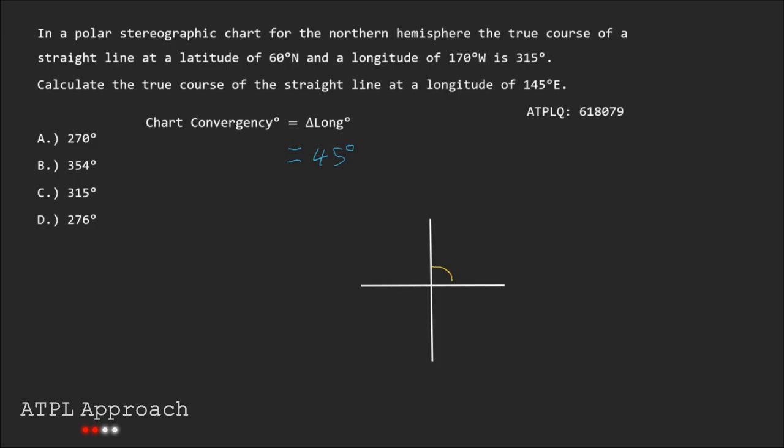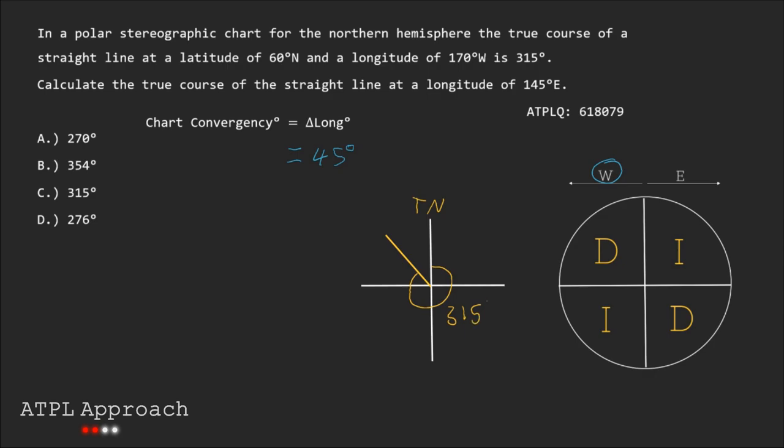I'm going to draw a diagram here which shows how we're traveling to the northwest and we're in the northern hemisphere so we can use the D-I-I-D diagram to help us. We circle the D which means that our track is going to be decreasing so what we do is we subtract the convergency from our track in order to get our true course. This means that the answer is A.